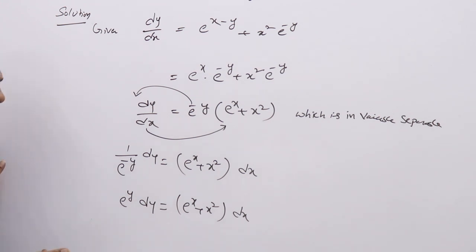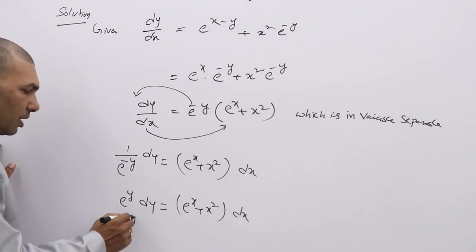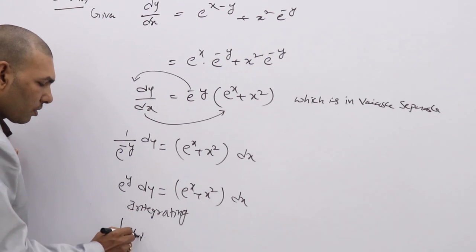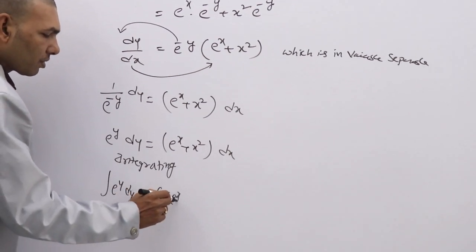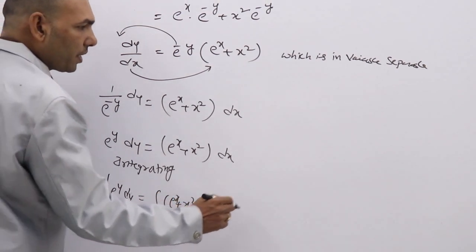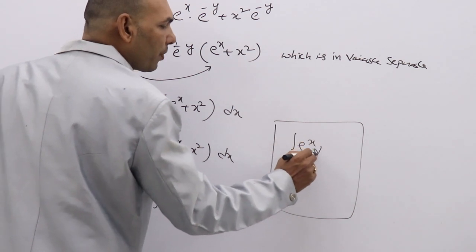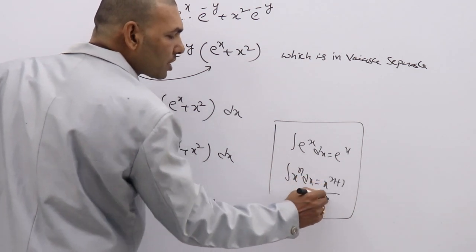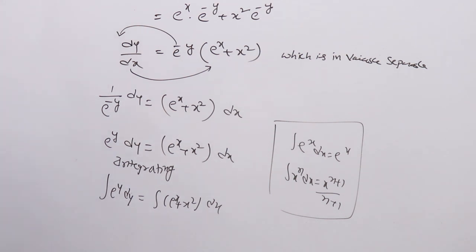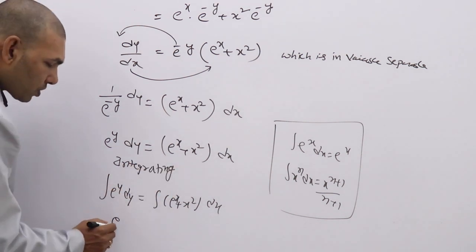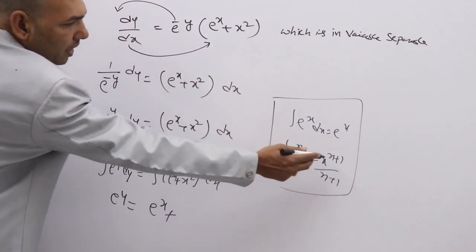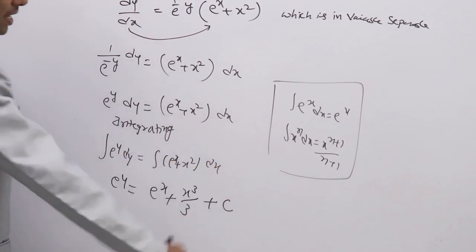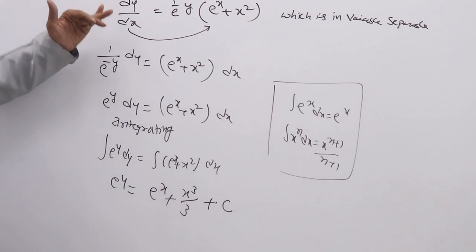Now, variables are separated. Simply integrate — you will get the answer. Integrating: ∫eʸ dy = ∫(eˣ + x²) dx. Recall the formulas: ∫eˣ dx = eˣ, and ∫xⁿ dx = xⁿ⁺¹/(n+1). So ∫eʸ dy = eʸ, ∫eˣ dx = eˣ, and ∫x² dx = x³/3. After integration, add the arbitrary constant c.